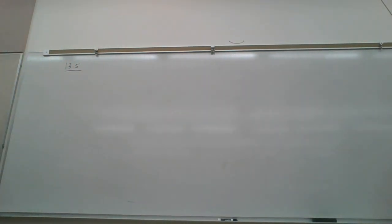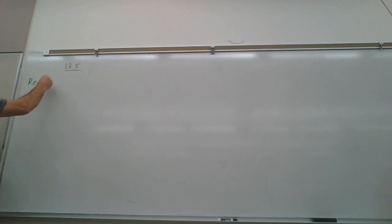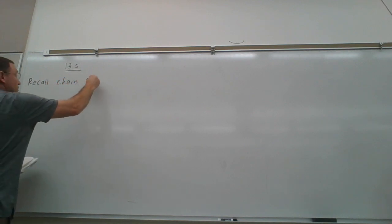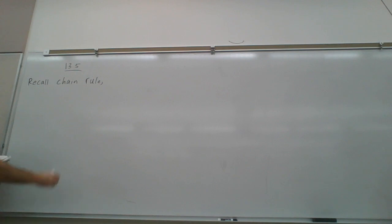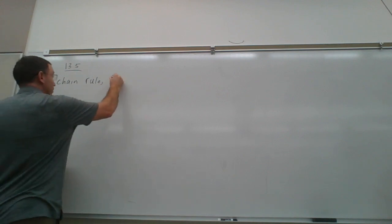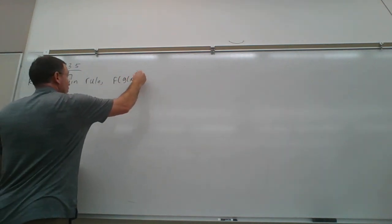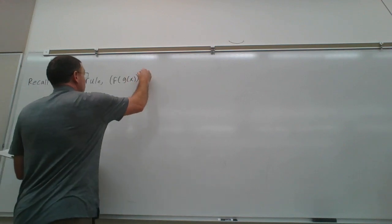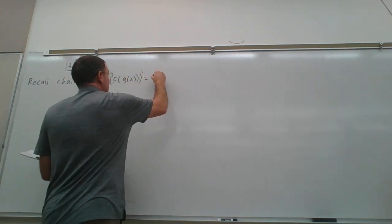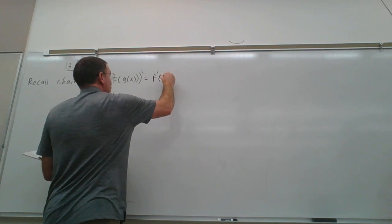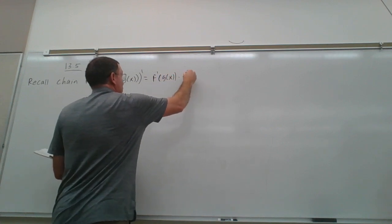Today we're going to look at section 13.5, the chain rule in higher dimensions — the multivariable chain rule. Let's recall the single-variable chain rule from Math 150. If you have a composition of two functions, the derivative of the composition equals f prime of g of x times g prime.